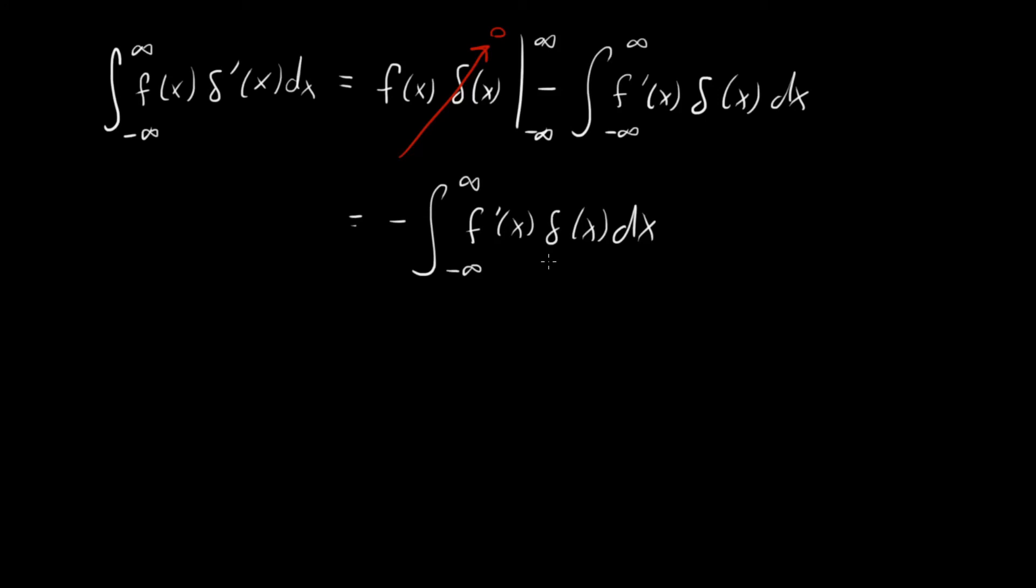So this is how you deal with derivatives on the delta function. You do integration by parts, and you see that really what you're just doing, and the way that people will often write this is that f of x times delta prime of x outside the integral is equal to minus f prime of x delta of x. And this is a core property to know.